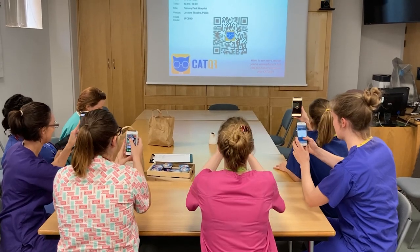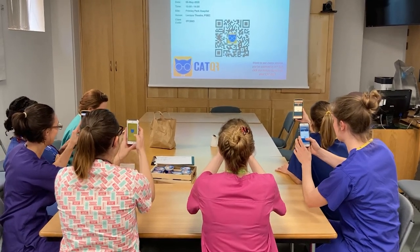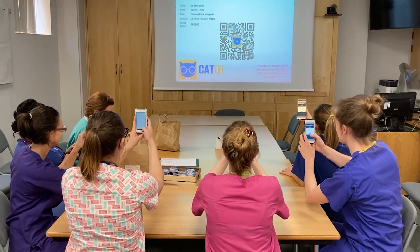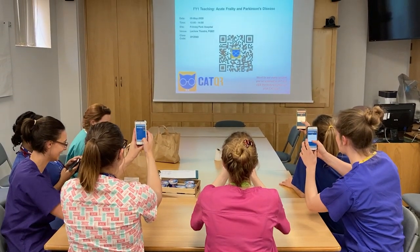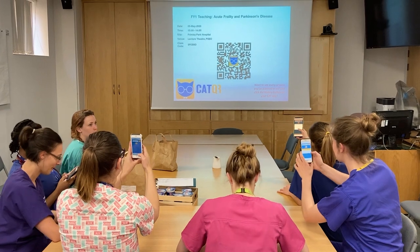What does CAT stand for? CAT stands for Class Attendance Tracker. It's a simple, intuitive, paperless solution designed to accurately track attendance. It uses a QR code that you normally put up in a classroom, but you can actually do it over video conferencing such as Teams or Zoom, or even inside a piece of e-learning to show that they'd actually done it.